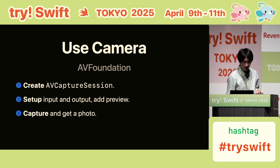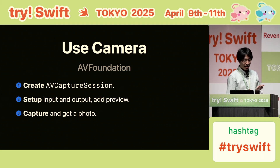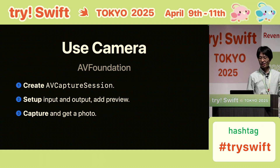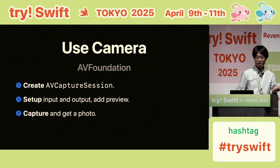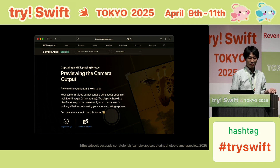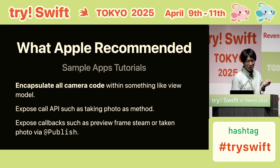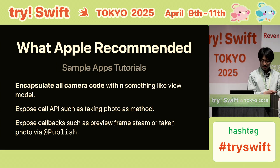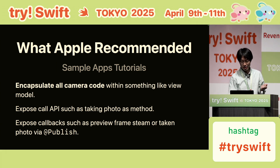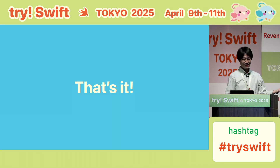To access camera APIs on our platform, we need to use AV Foundation, and specifically the AVCaptureSession. It's a simple three-step process: create a session, set up, and capture. Unfortunately, Apple hasn't provided a SwiftUI API yet. However, Apple does offer detailed interactive documentation. Apple suggests placing everything in a stateful view model, exposing methods like capturePhoto, and using a published property wrapper to handle callbacks like getting photos taken. So the conclusion is: put everything in a view model and use it from your view. That's how the camera API is recommended to be used from SwiftUI.